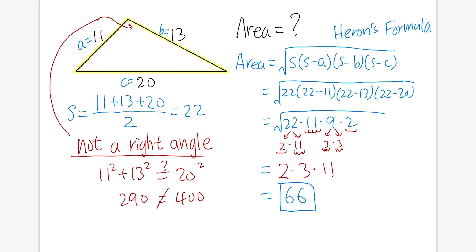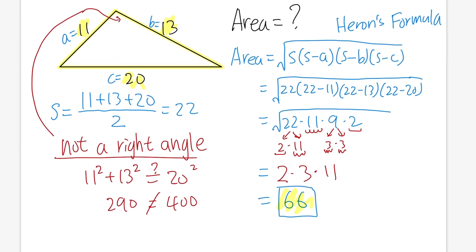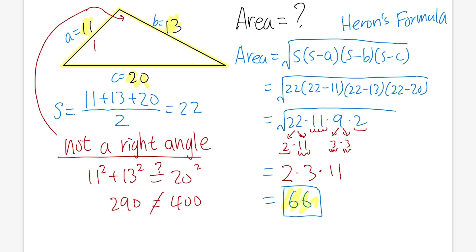One fun fact: notice how all the sides were integers — 11, 13, and 20 — and the area also happens to be an integer. In this case, we call such a triangle a Heronian triangle, when all the sides and also the area are positive whole numbers. Pretty cool! Now, the next question is: why does Heron's formula work? And we are going to prove it right here, right now.